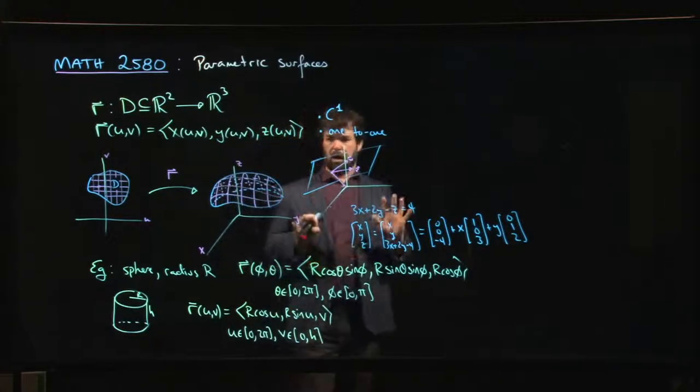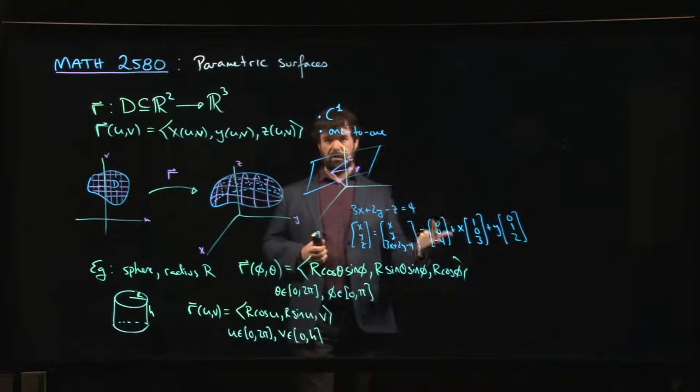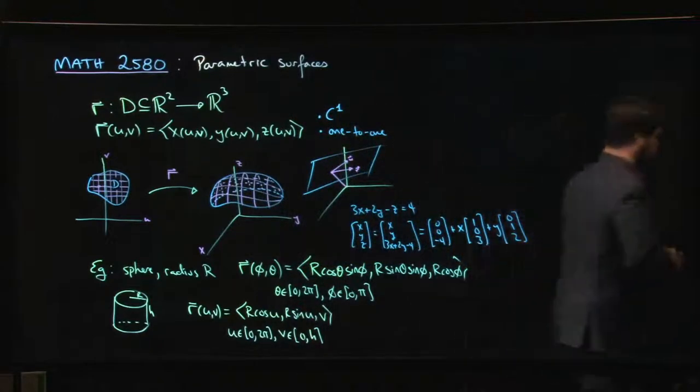I think we'll pause here. We're going to come back and look at a few more details. We're going to look at tangent vectors, normal vectors, and eventually get to area.